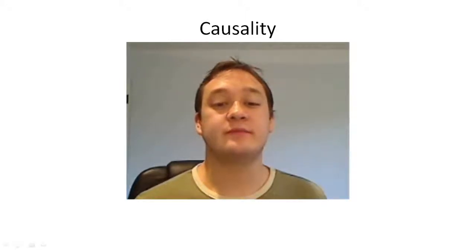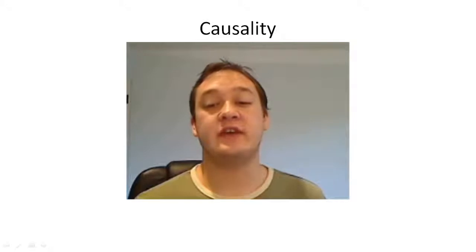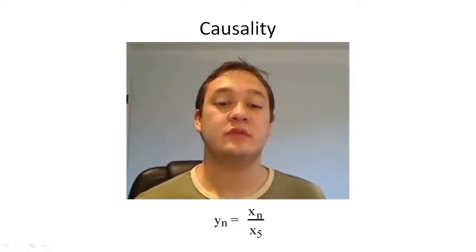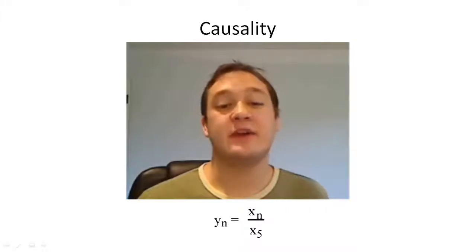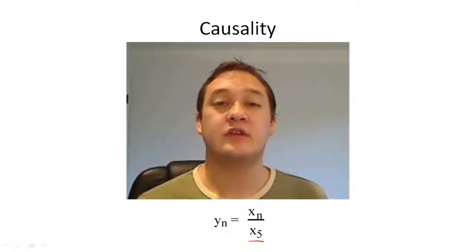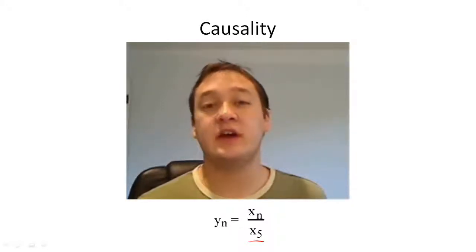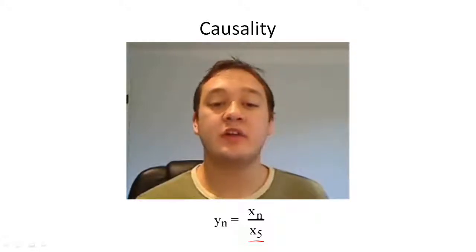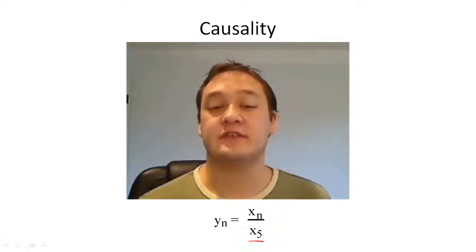An example non-causal system would be if we wanted to divide all samples of x of n by the maximum value in x of n. For example, if the maximum value of x of n was at x sub 5, then the filter would look like this. Notice that x0, x1, up to x4 all depend on a future sample, x5.